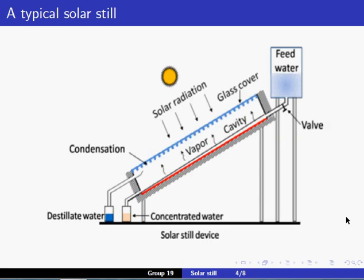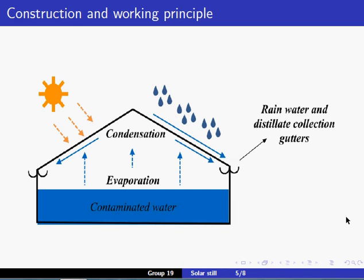A solar still consists of a shallow triangular basin made up of fibre reinforced plastics. The bottom of the basin is painted black so as to absorb solar heat effectively.